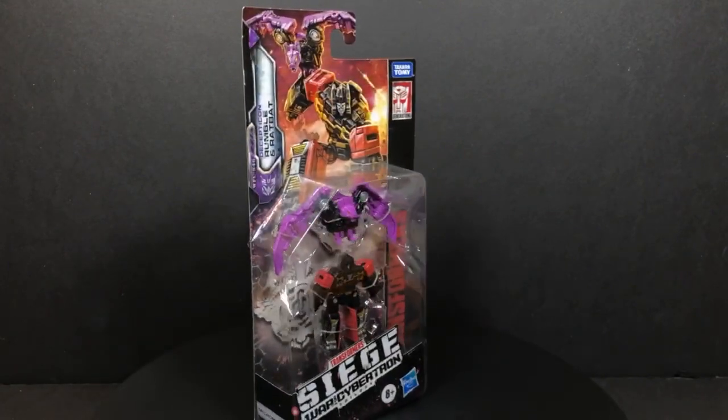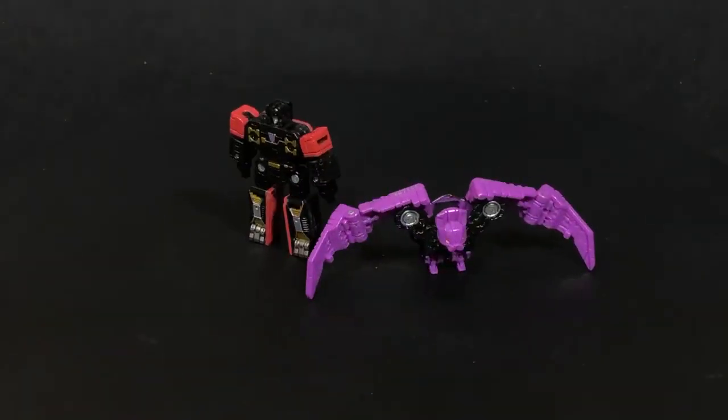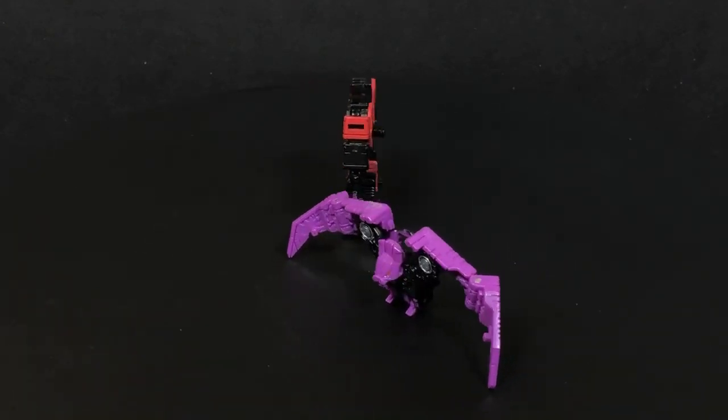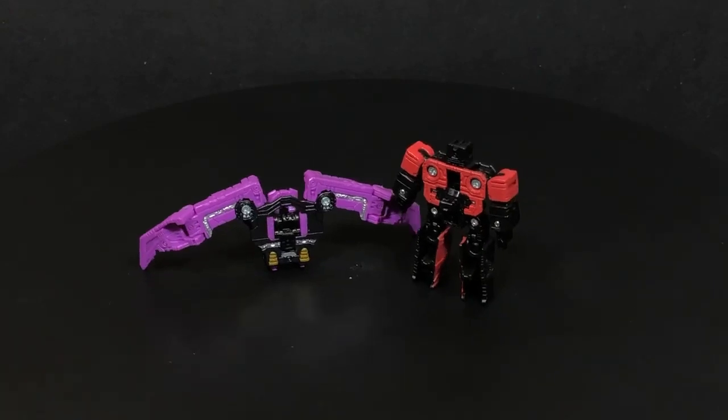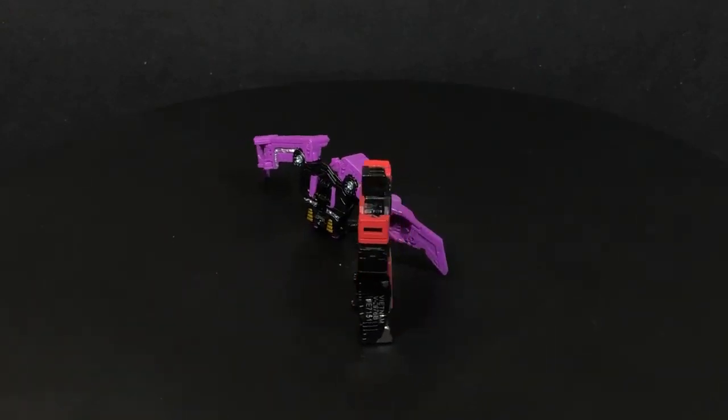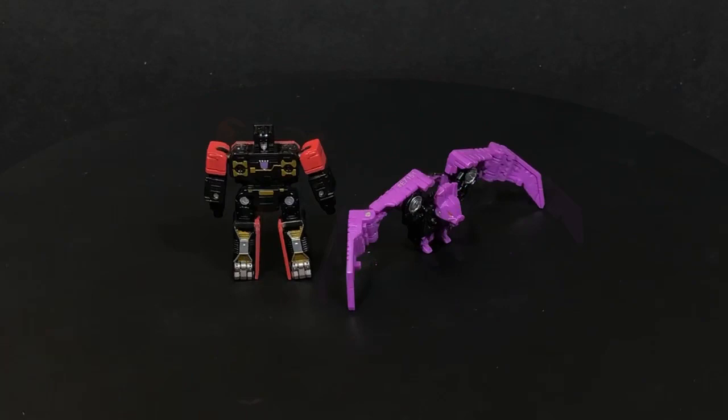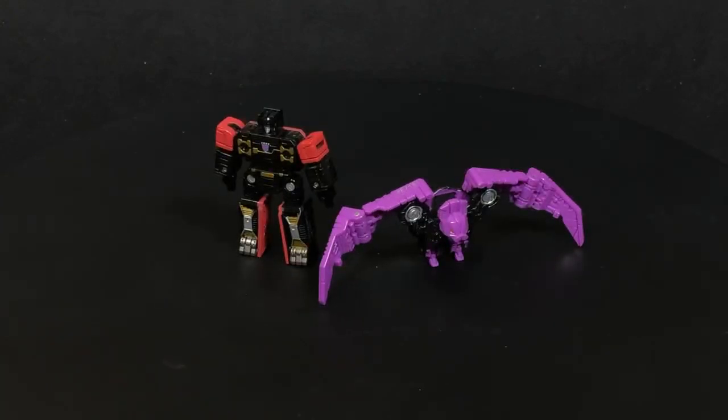As you can see here, they're in basically their robot modes - one a robot, one a bat. All right, so here we are with the set of Rumble and Rat Bat.